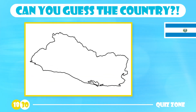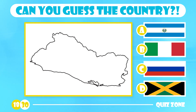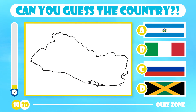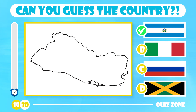What country is this? El Salvador, Italy, Russia or Jamaica? The correct answer is El Salvador. El Salvador is the smallest and most densely populated country in Central America, with over 6.3 million people living in an area of 21,041 square kilometers in size.